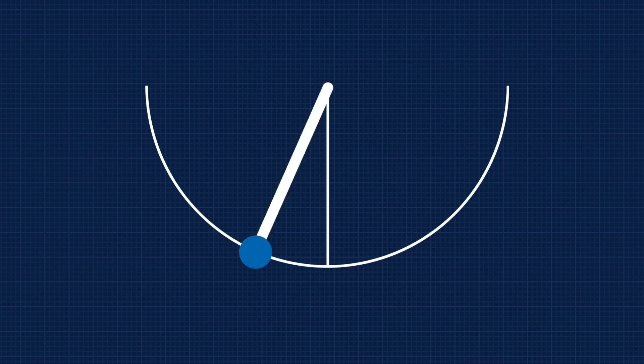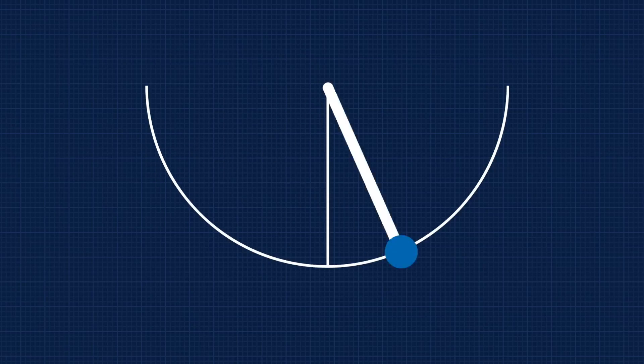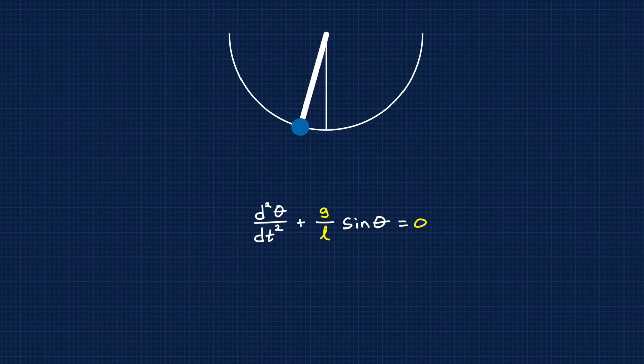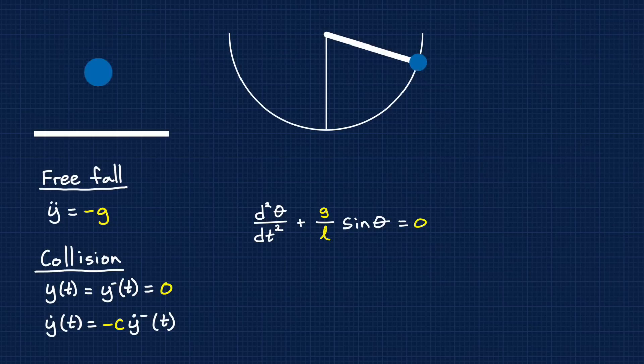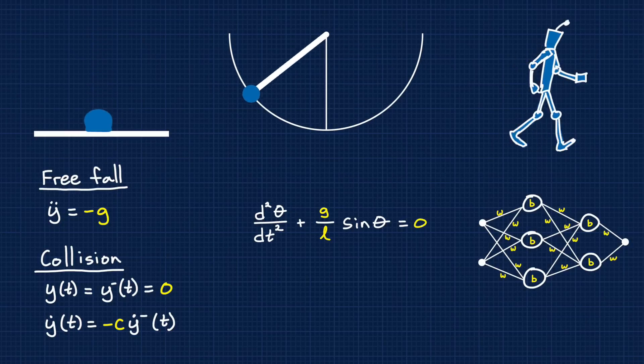The point of creating a model is so that you have a mathematical representation of your real system, whether that system is like a pendulum whose model might be written directly as an ordinary differential equation, or a hybrid system with interacting continuous and discrete dynamics, or something like a walking robot whose dynamics might be learned and captured with a neural network.